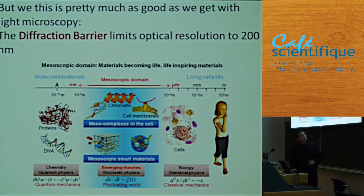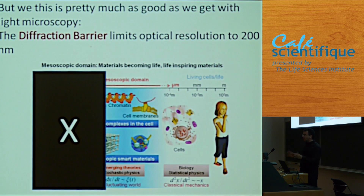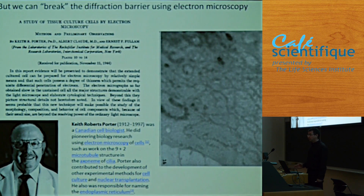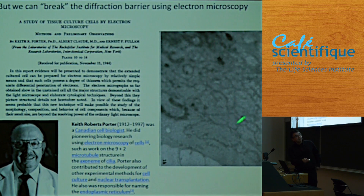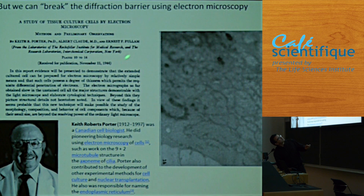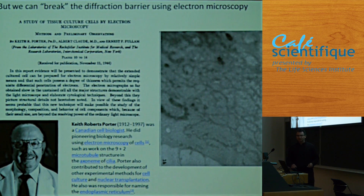We know this diffraction barrier - we can go down to 200 nanometers with optical microscopy, but the problem is we really can't see anything below this limit. So the question is, how do we as biologists look at material in the cell smaller than that size? One way - and it was a real revolution in cell biology - was the discovery and application of the electron microscope for biological samples. This guy is Keith Porter, a pioneering cell biologist who, you can see here, published in 1945 and applied electron microscopy to the study of cells. He was a Canadian born in Halifax who worked at Rockefeller in New York.